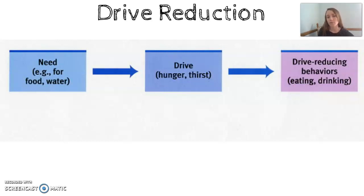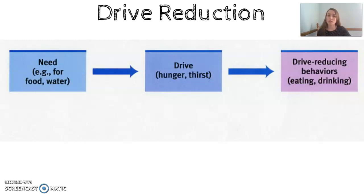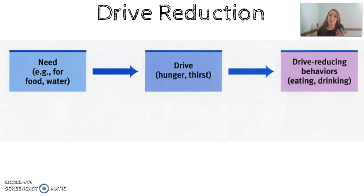The same thing happens with thirst — when you become very thirsty, you start to become uncomfortable, and your body wants to reduce that discomfort. That discomfort is the drive, and it motivates the behavior: you eat or drink to remove that uncomfortable biological feeling. This is linked with homeostasis, which is the biological balance in your body. The drive makes you uncomfortable, and you want to get back to that balanced, comfortable state.